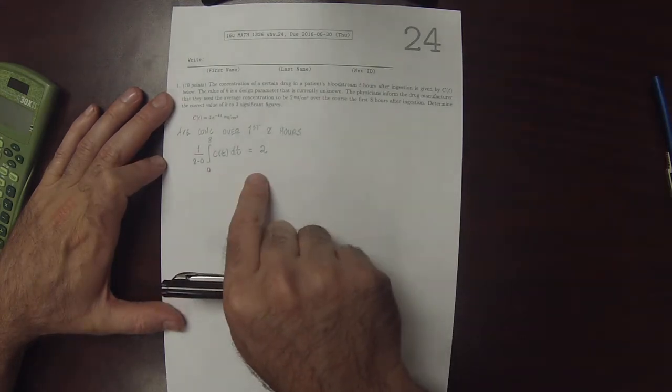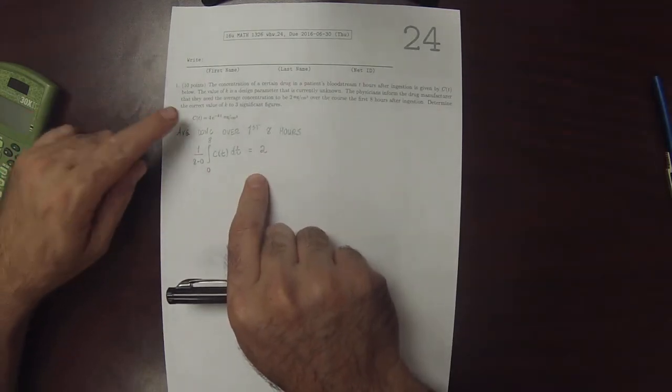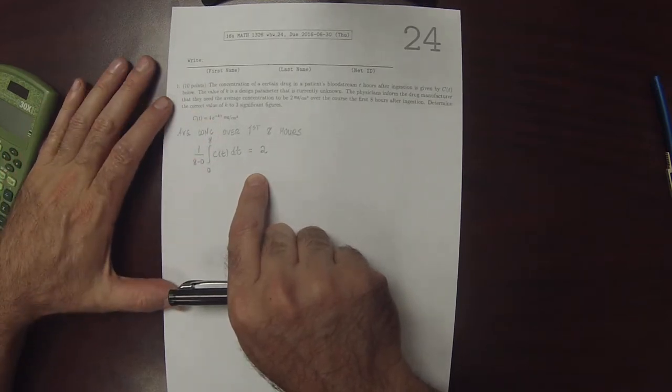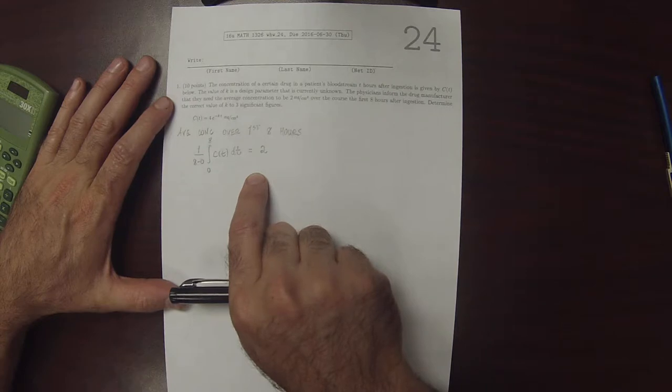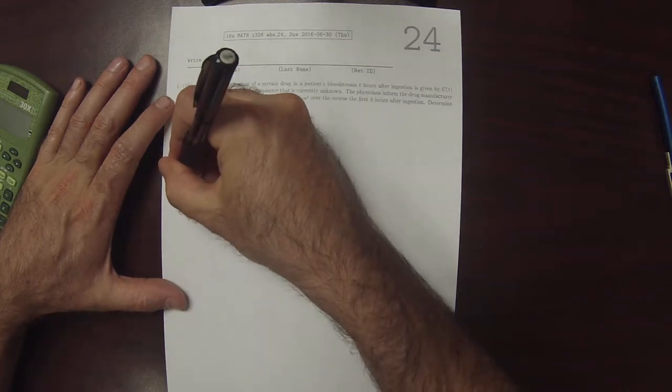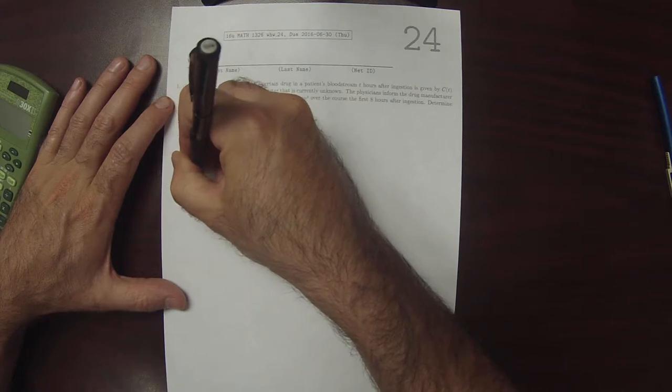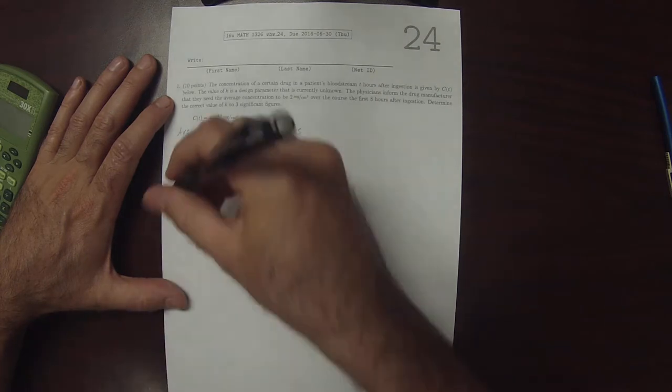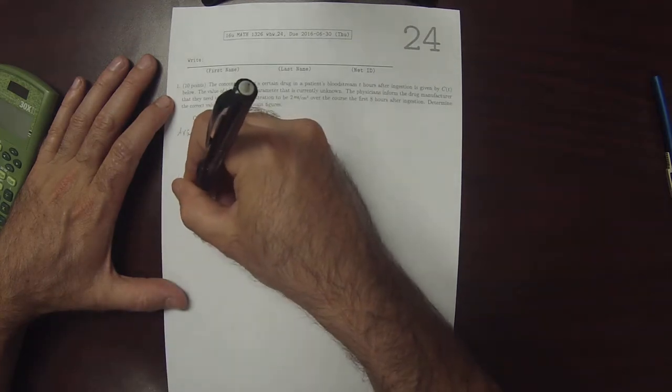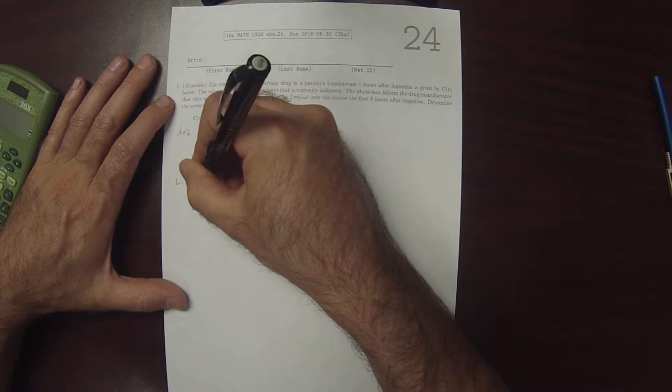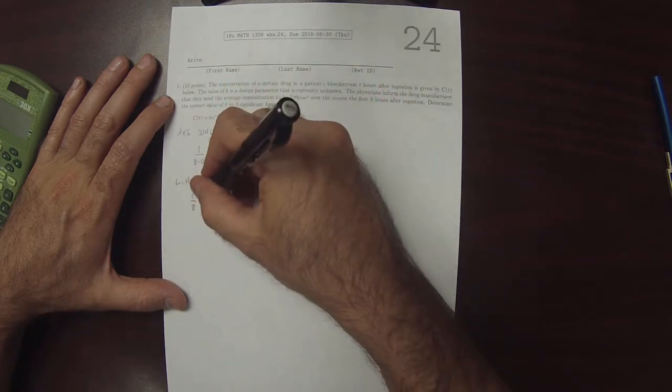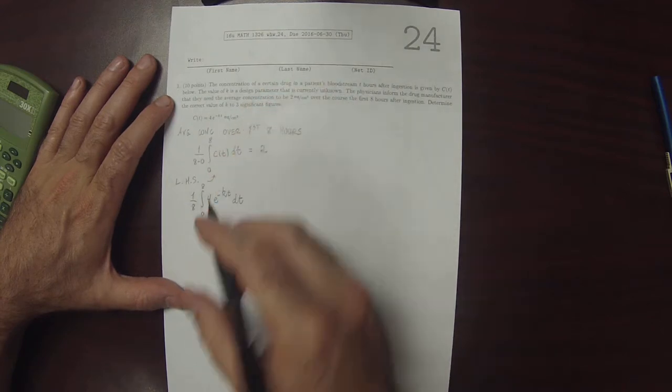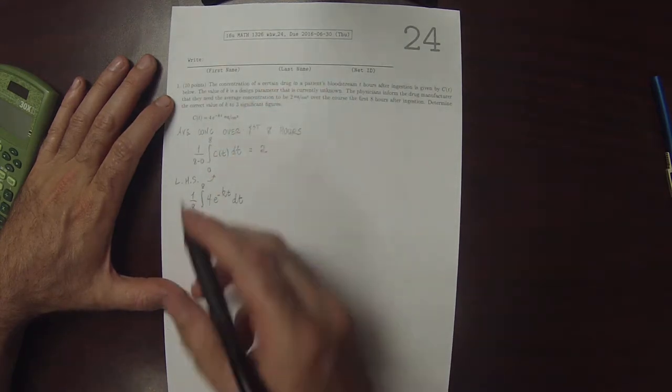So, this is an equation that when we plug in what C of t is, we'll have K in it. And we're going to need to solve for that K. So let's evaluate the left-hand side. So that would be 1/8 integral 0 to 8 and then 4 e to negative Kt dt. So this 4 can come out, making that a half.